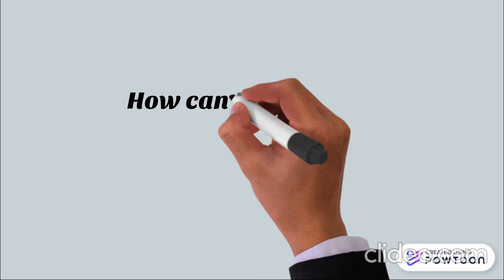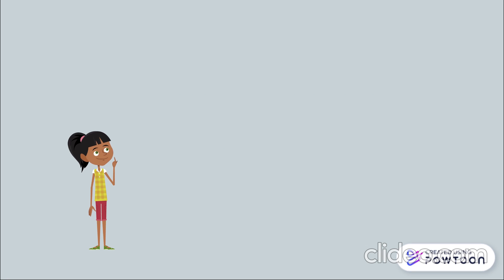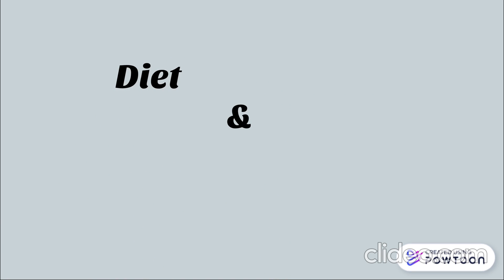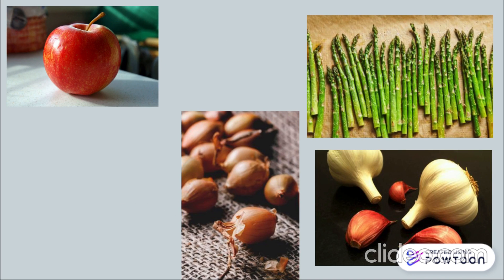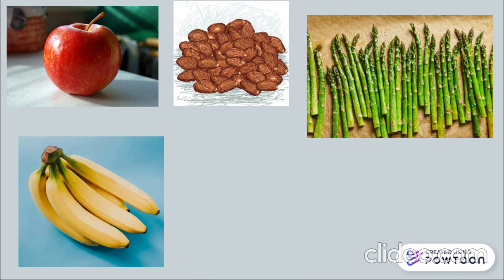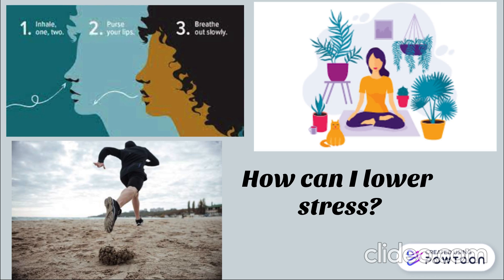How can you keep your gut microbiome healthy? There are two factors that play a part in maintaining healthy gut bacteria: diet and stress. When it comes to diet, probiotics and prebiotics are extremely important. Probiotics contain beneficial bacteria, and prebiotics contain substances that promote the growth of beneficial bacteria. Natural foods that promote healthy gut bacteria include onions, garlic, apples, asparagus, cacao, and bananas. To lower stress, you can engage in exercise, meditation, or mindfulness exercises such as breathing exercises.